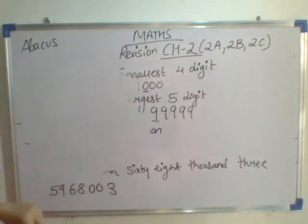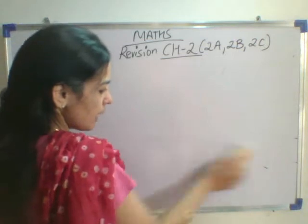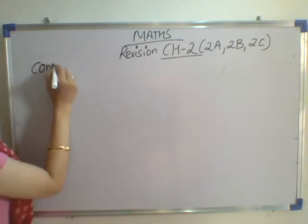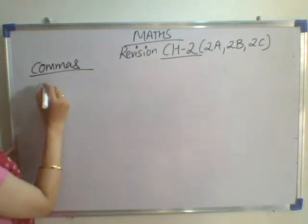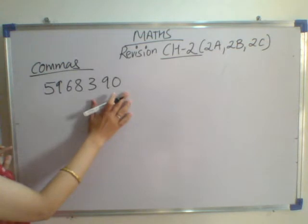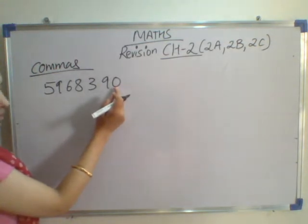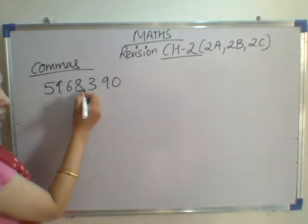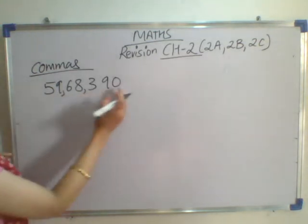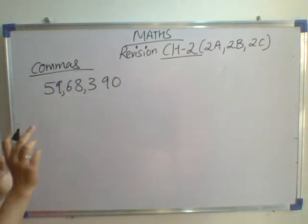Next, I will be telling you how to put the commas. If I write a given number and tell you to put the comma at the right place — no commas are there — you have to put the comma at the right place. How will you do it? You will be counting from the right-hand side: 1, 2, 3. After every 3 digits, you put 1 comma. Then, after every 2 digits, you put the comma. So initially, after 3 digits, then after every 2 digits, you put the comma.